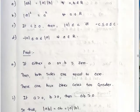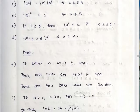For the proof: if either A or B is 0, then both sides are equal to 0.